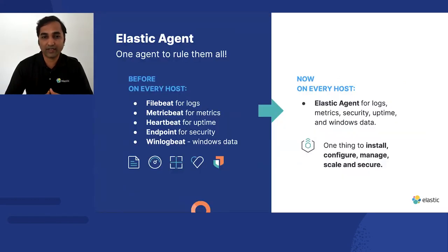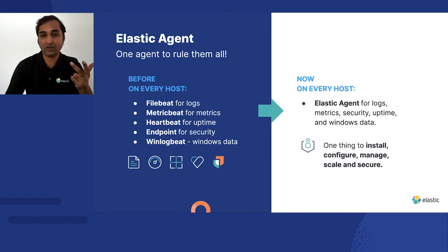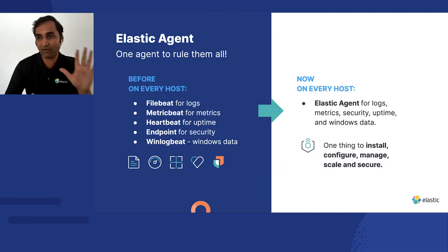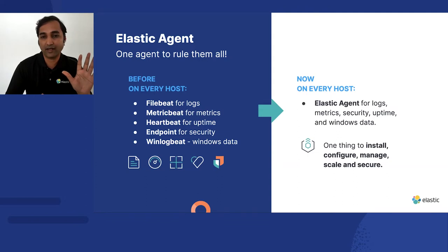With Beats, taking Nginx as an example — to observe it you would deploy Filebeat for logs, Metricbeat for metrics, Heartbeat to ping the server, endpoint security to protect against malware, and Winlogbeat for Windows OS logs and metrics — really five different beats, five different binaries to manage. With Elastic Agent, now you have just one agent for all use cases: one thing to install, configure, manage, scale, and secure.